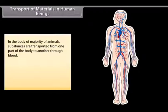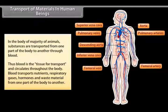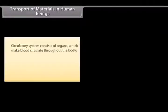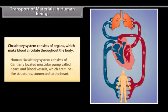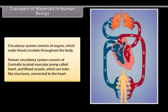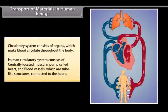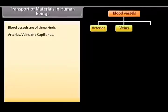In the body of majority of animals, substances are transported from one part of the body to another through blood. Thus blood is the tissue of transport and circulates throughout the body. Blood transports nutrients, respiratory gases, hormones and waste material from one part of the body to another. Circulatory system consists of organs which make blood circulate throughout the body. Human circulatory system consists of centrally located muscular pump called heart and blood vessels which are tube-like structures connected to the heart. Blood vessels are of three kinds: arteries, veins and capillaries.